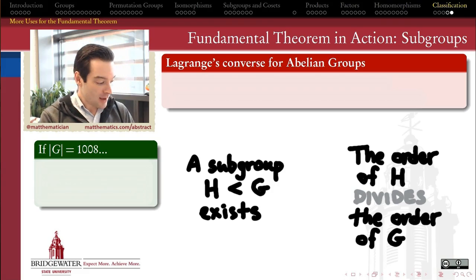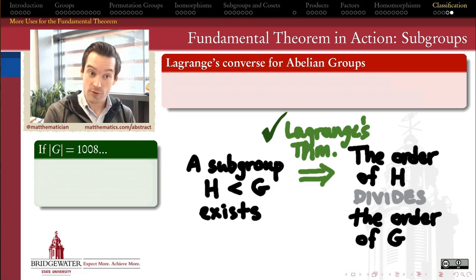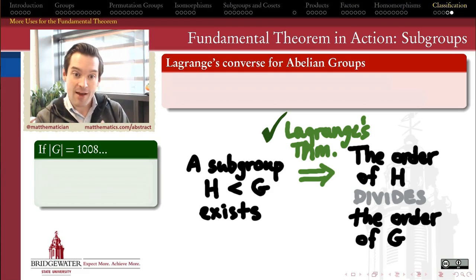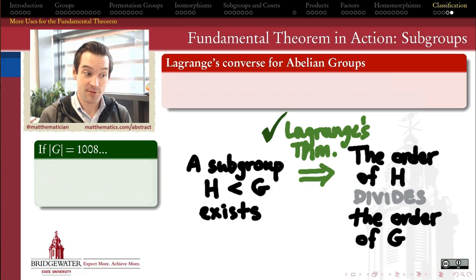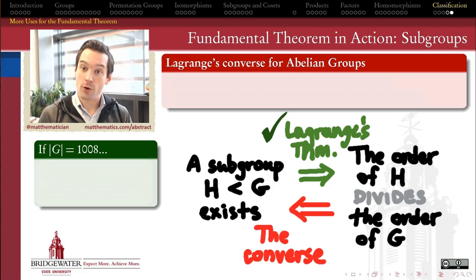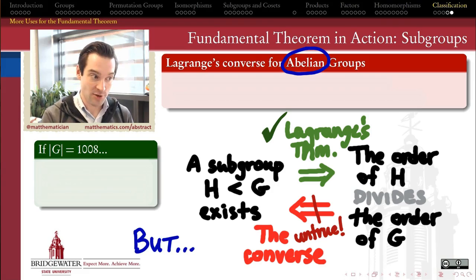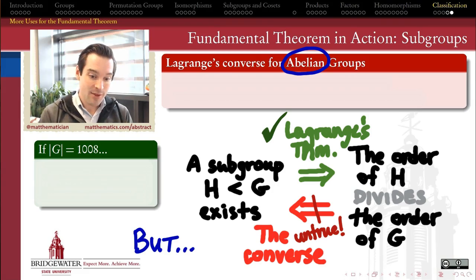What Lagrange's theorem does say is that for any finite group G, if a subgroup H exists in G, then the order of H divides the order of G. So if G has order 120 and H is a subgroup of G, then H can have order 24, or order 60, but its order must be a divisor of 120. What it doesn't tell us is that given a divisor of the order of the group, such a subgroup must exist. Lagrange's theorem cannot guarantee the existence of a subgroup of a given order, and not every divisor of the order of G is realized as the order of a subgroup of G.